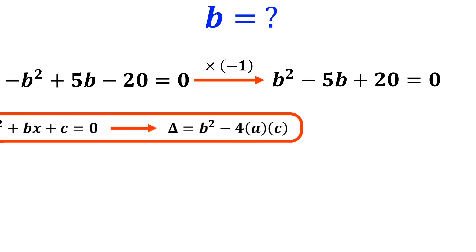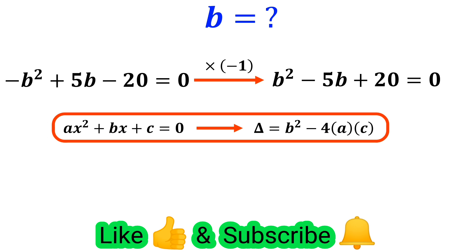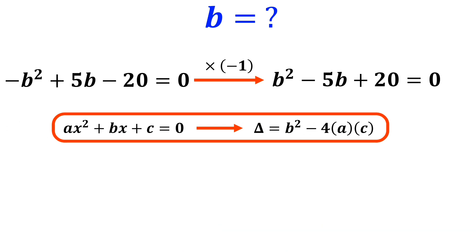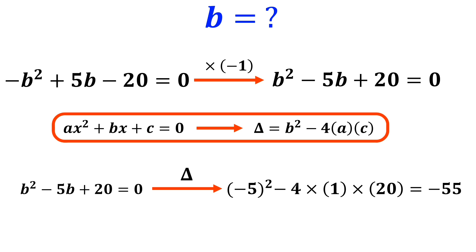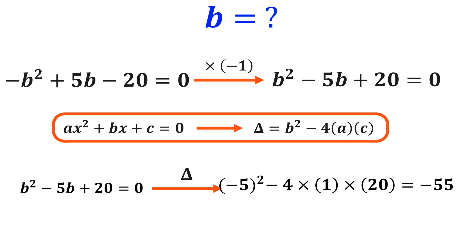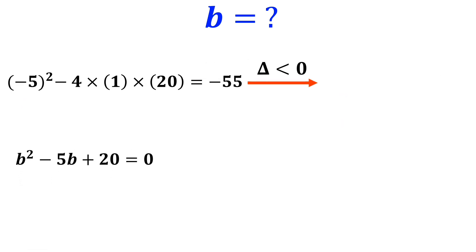In a quadratic equation, delta is found using the formula delta equals b squared minus 4 times a times c. So delta for this expression equals negative 5 squared minus 4 times 1 times 20, which equals negative 55.